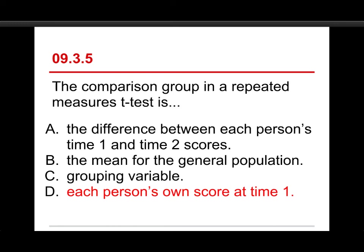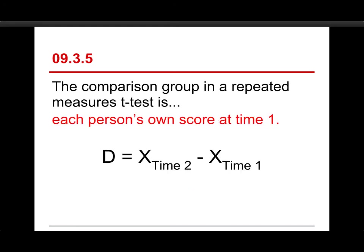B, the mean for the general population, is something that we might use, for instance, with a one-sample z or t-test. We're comparing a sample to a population mean. And the grouping variable is the thing that separates the groups. But, again, what we're looking at here is how each person's score is different from their time 1 score.